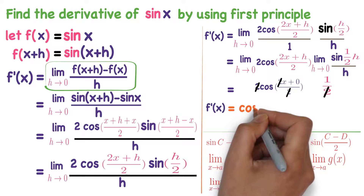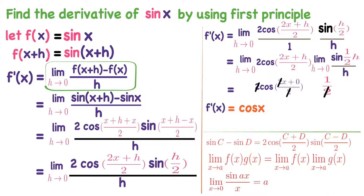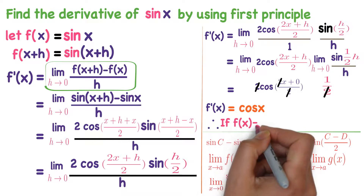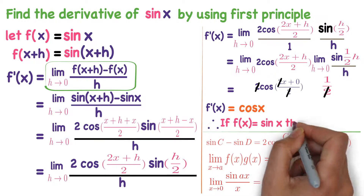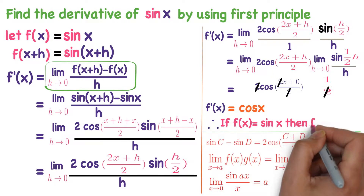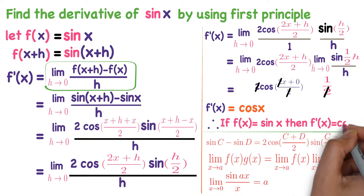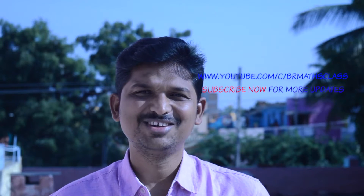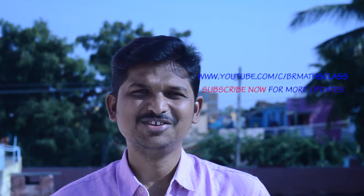So we get that f'(x) is cos x. The conclusion: if f(x) is sine x, then its derivative is cos x. From now onwards we take this as a formula — the derivative of sine x is cos x. I hope you understood this class.